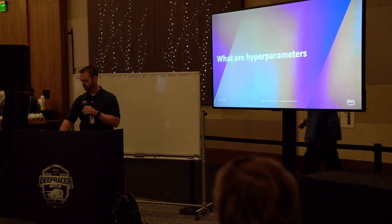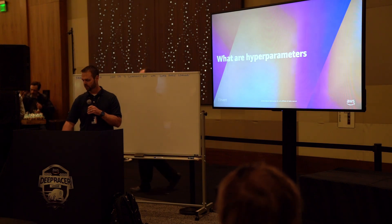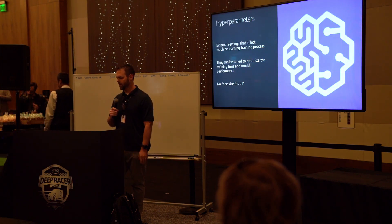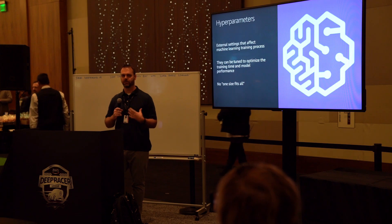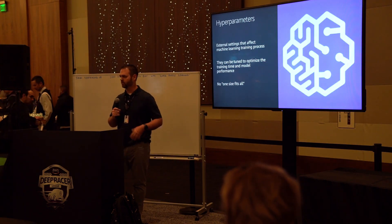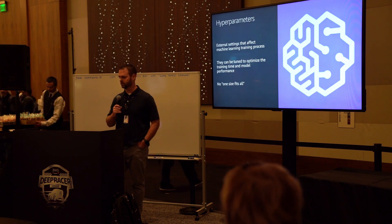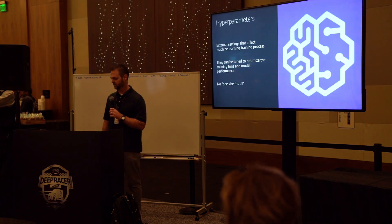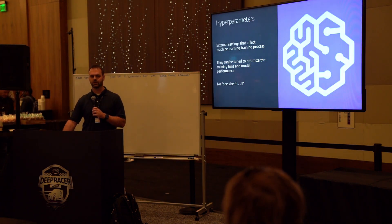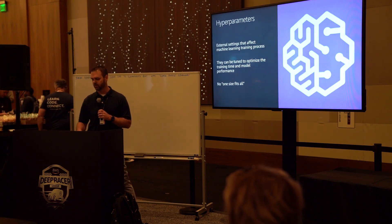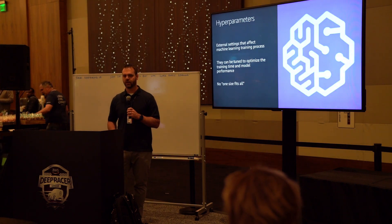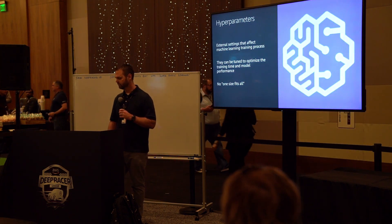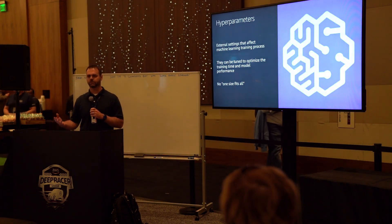So first off, what are hyperparameters when we're talking about machine learning? These are pretty much the settings that are external to the model itself. The model has all these weights and biases that are being trained during the training process. Well, these hyperparameters are external knobs and dials that you can tune to actually optimize the training process, which should hopefully help improve the training time and performance so you can get the best lap times. One thing to keep in mind is that there's not really one-size-fits-all here. Your reward function, hyperparameters — you really have to experiment with this stuff.